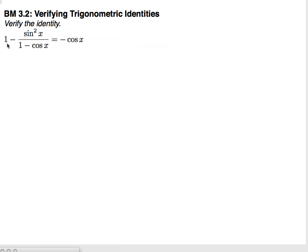Here we're asked to verify the identity: 1 minus sine squared x over 1 minus cosine x equals negative cosine x.